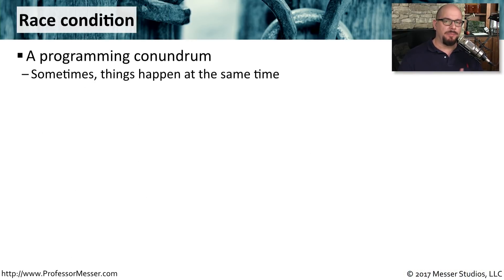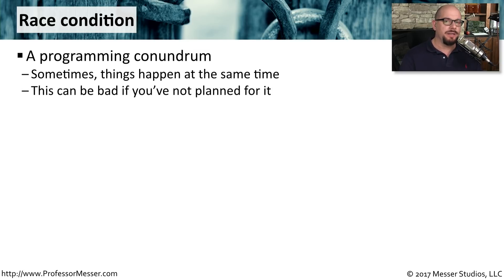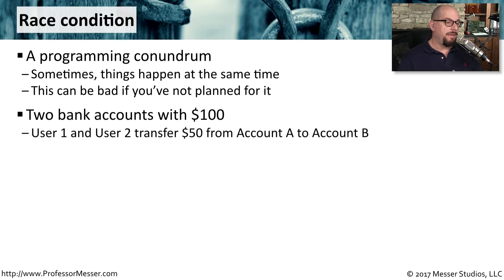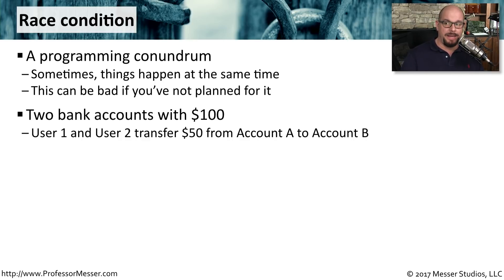A race condition is a coding problem, because on the systems we use these days, there are usually multiple users performing multiple functions all at the same time. If your coding has not taken into account that these multiple things could happen simultaneously, you will run into a race condition. Let's take an example of having two bank accounts, account A and account B. Both of these accounts have $100 in them. You also have user 1 and user 2, and they perform a transfer of money from account A to account B simultaneously.